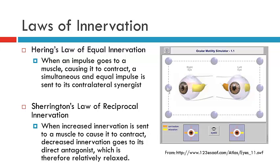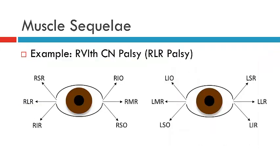These laws of innervation govern what we see as the muscle sequelae. To illustrate this, I'll take you through an example of a right lateral rectus palsy. Before you is a pair of eyes with the extraocular muscles shown in their field of action. If we have a right lateral rectus palsy, we will note an underaction of this muscle, as we've had a loss of function of the lateral rectus.